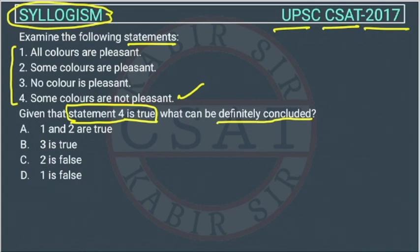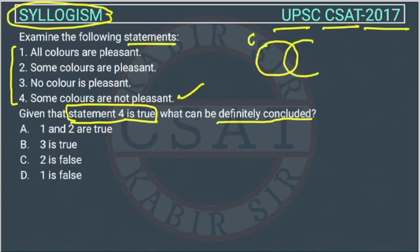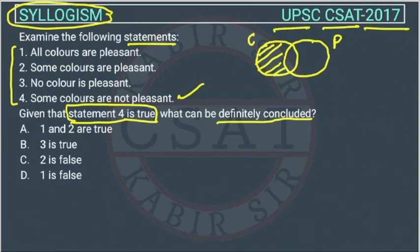Because statement four is correct, we will start from statement four. Statement four is: some colors are not pleasant. Suppose a diagram of color — this is the color circle and this is the pleasant circle. There are some colors which are not inside pleasant. So, some colors are not pleasant. This is given.